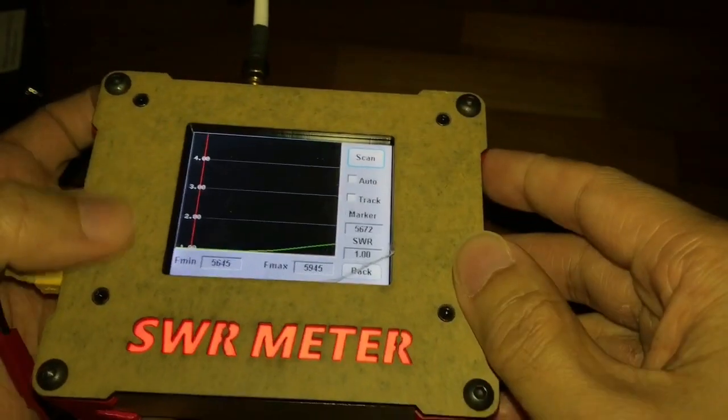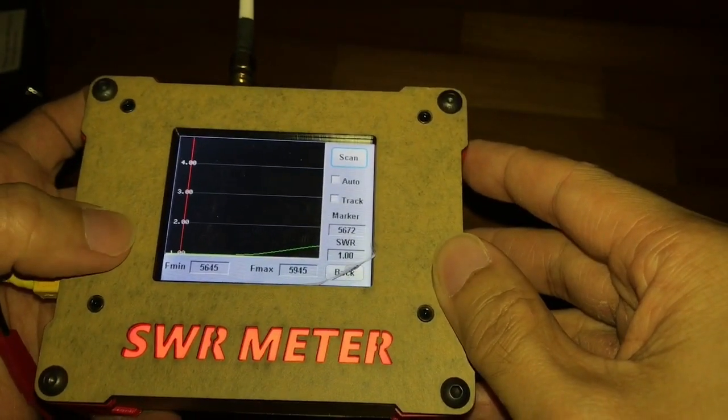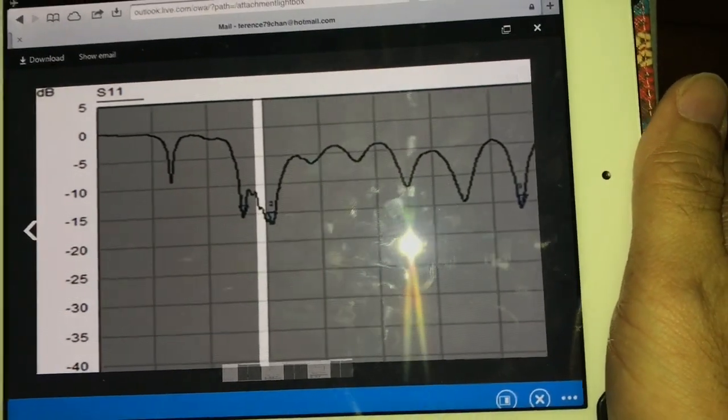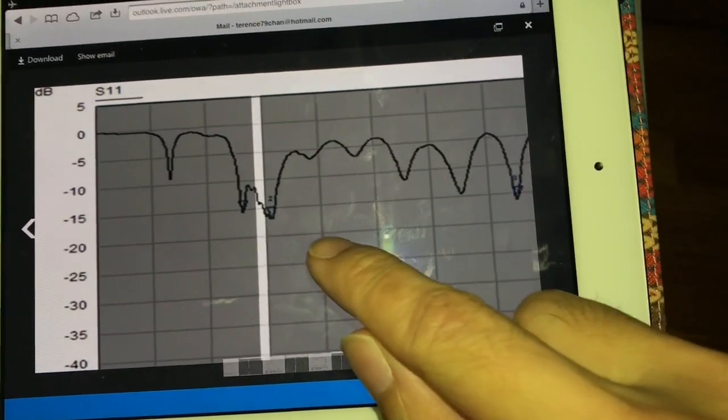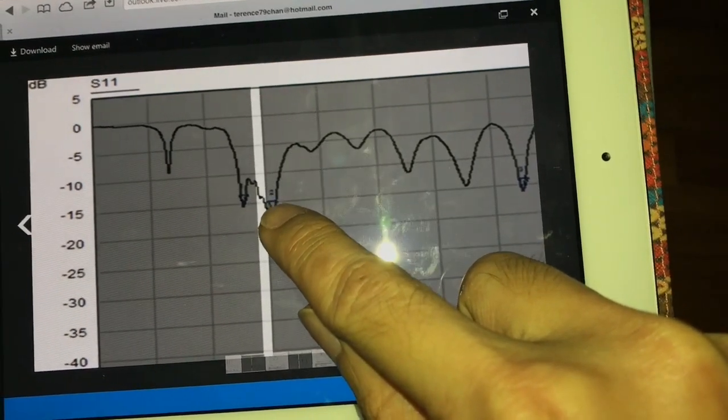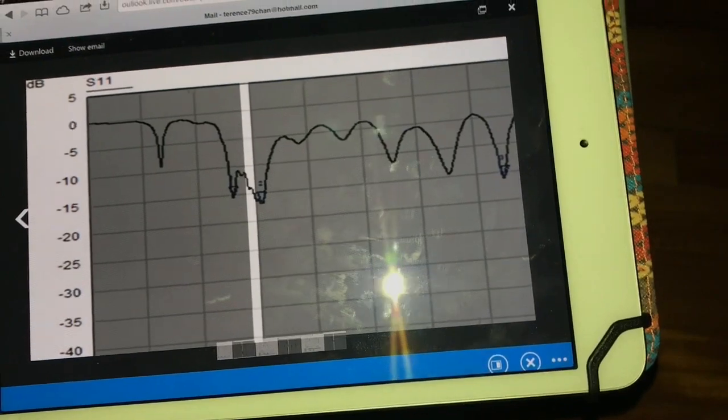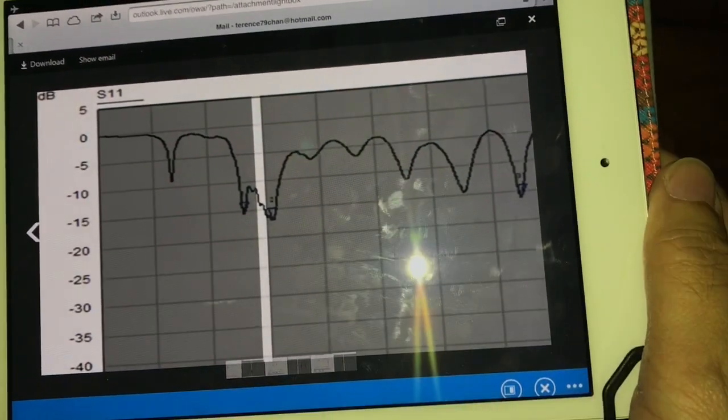On this meter, it says that 5.645 has a better frequency response, better performance. But according to the lab equipment right here, in fact, we should be getting better performance at 5.945. So that's a bit of a discrepancy there in terms of reading.